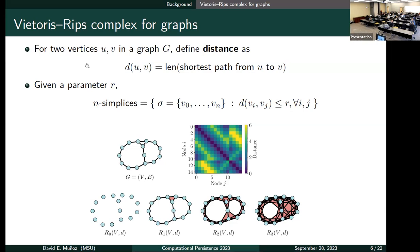Here we have an example. On the top, we have a graph and the distance matrix, the shortest path matrix. And then, here we have the rips complex for different ranges. So first, if we take the parameter r equal to zero, we get the point cloud, which in this case is the set of vertices of the graph.